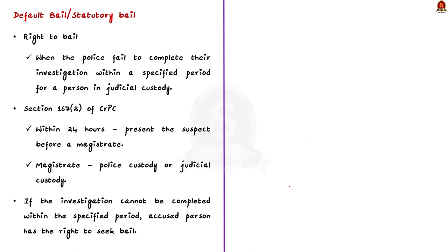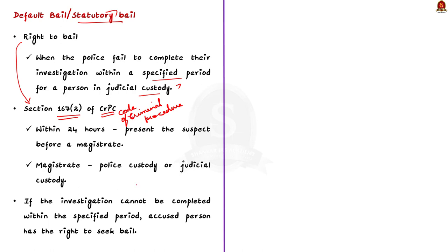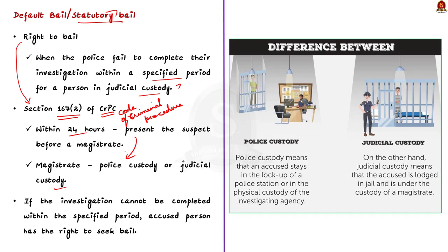Default bail is also known as statutory bail. It is a right to bail that arises when the police fail to complete their investigation within a specified period for a person in judicial custody. This right is enshrined in Section 167(2) of the Code of Criminal Procedure, that is CrPC. When the police are not able to finish the investigation within 24 hours, they present the suspect before a magistrate, who decides whether the suspect should be held in police custody or judicial custody. In police custody, the accused can be detained for up to 15 days.